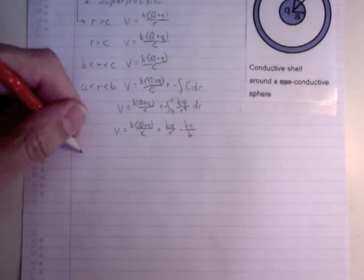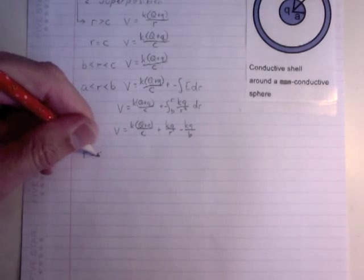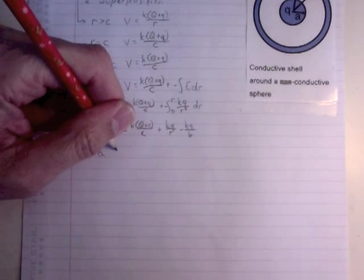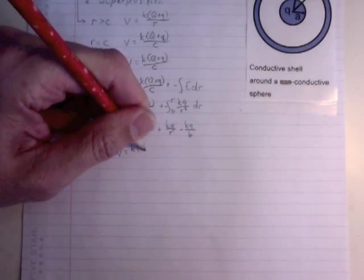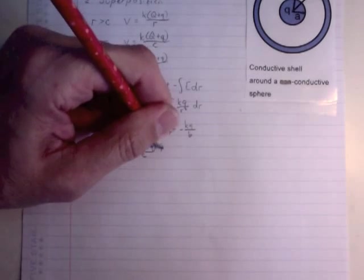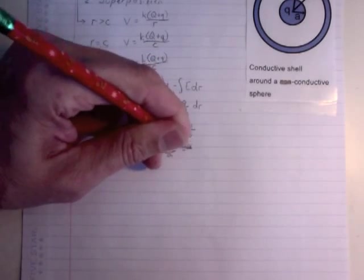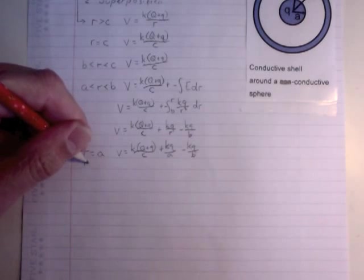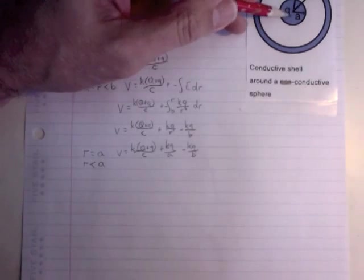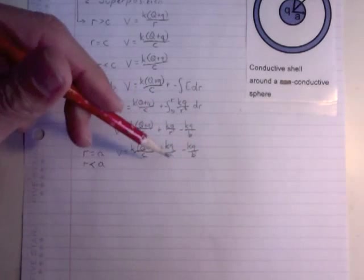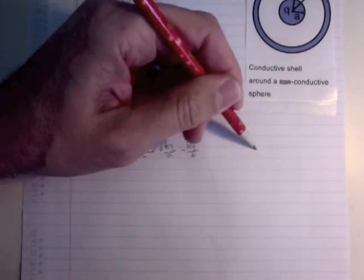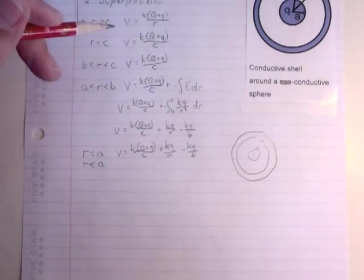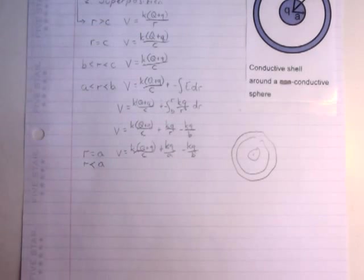So this voltage is going to be K times Q plus Q over C, when you integrate this, you get KQ over R with a negative in front, so it ends up being plus KQ over R evaluated at R, minus KQ evaluated at B. And that's your voltage inside that gap there. Then, R equals A. Once we get in there, we're going to need this. The voltage right at that surface, we just make that A. And inside, it's also true for R less than A, because there's no electric field inside that inner shell. So this just ends up being the exact same voltage.